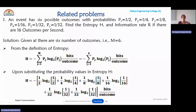Here we can discuss one problem. An event has 6 possible outcomes with probabilities P1 = 1/2, P2 = 1/4, P3 = 1/8, P4 = 1/16, P5 = 1/32, and P6 = 1/32. You are supposed to calculate the entropy and information rate capital R if there are 16 outcomes per second.